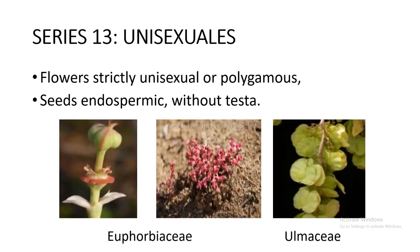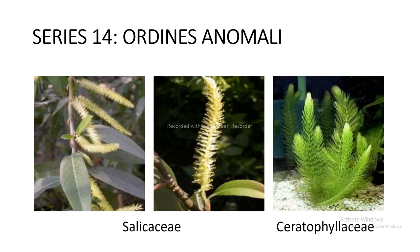Series 13 Unisexuales: flowers strictly unisexual or polygamous, seeds endospermic without testa — includes Euphorbiaceae and Ulmaceae. Series 14 Ordines Anomali: includes Salicaceae and Ceratophyllaceae as shown in the figure.